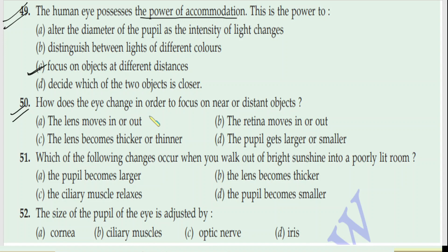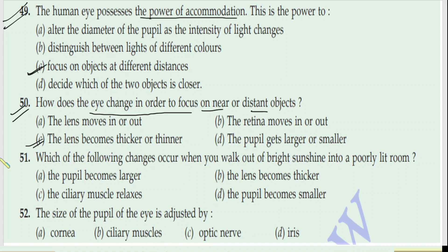Question 50: How does the eye change in order to focus on near or distant objects? The lens doesn't move in or out, and the retina doesn't move. The lens becomes thicker and thinner. When light comes from a distant object, the lens gets stretched and thin. When light comes from a near object, the lens becomes thick. So the right answer for question 50 is C: the lens becomes thicker and thinner.